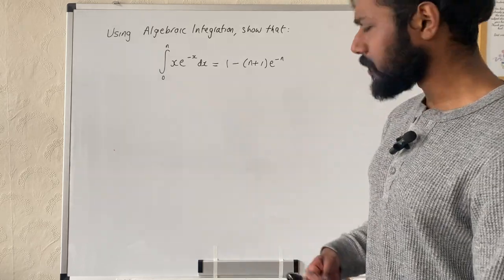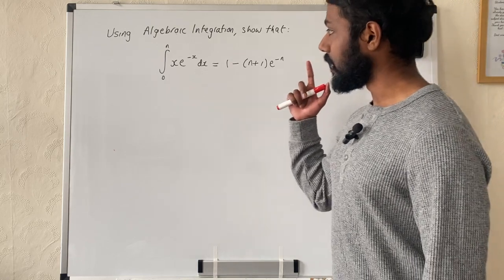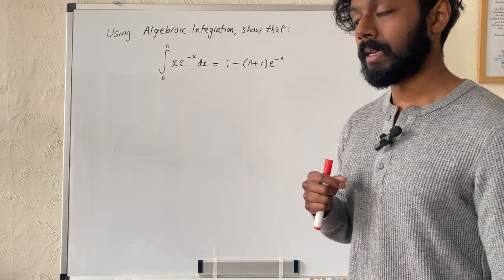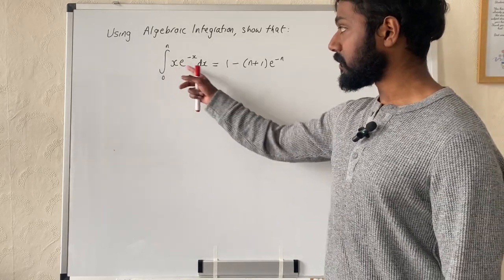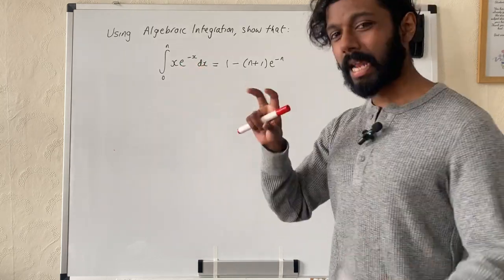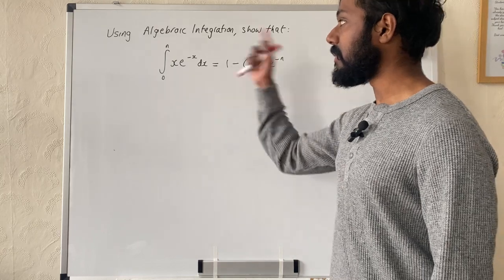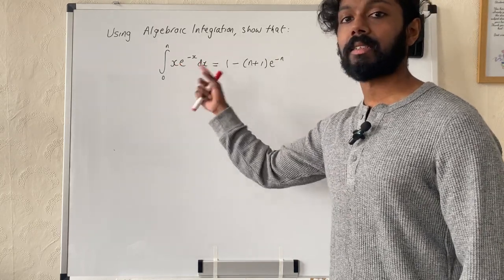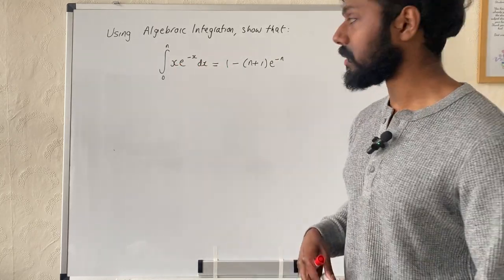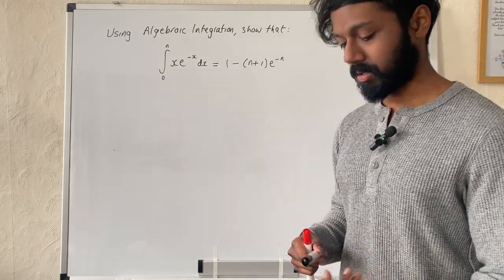To do this question, first I need to recognise what integration technique to use. I can see I've got the product of two functions and they don't really have any relationship with each other — the derivative of one is not a scalar multiple of the other, which would be the reverse chain rule method. So I know immediately that I should be using integration by parts.